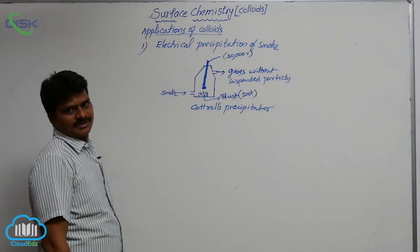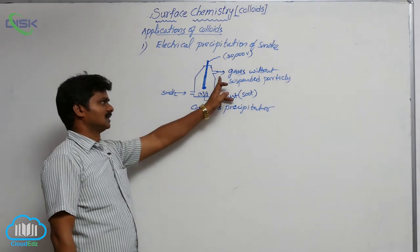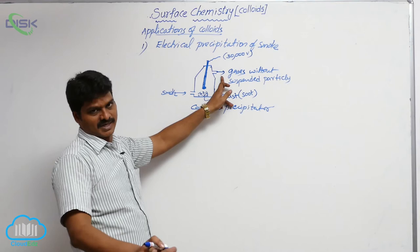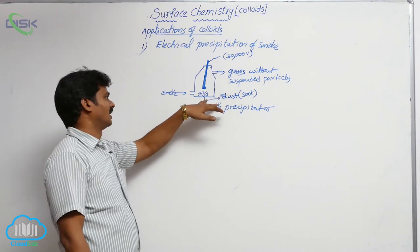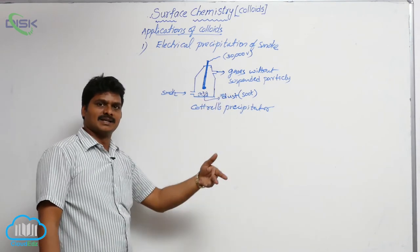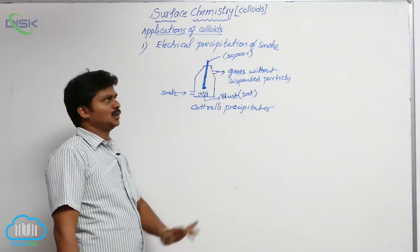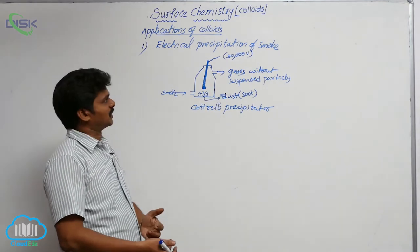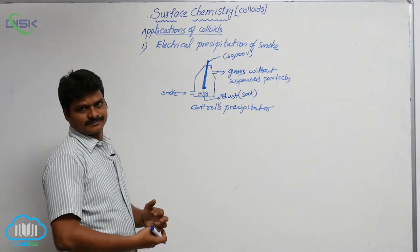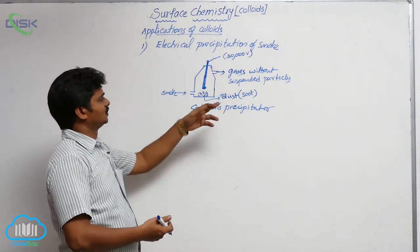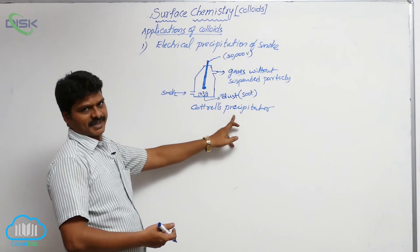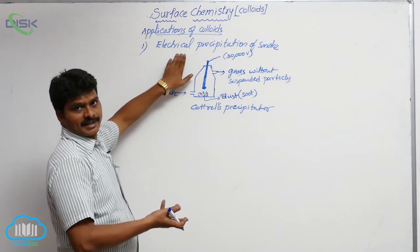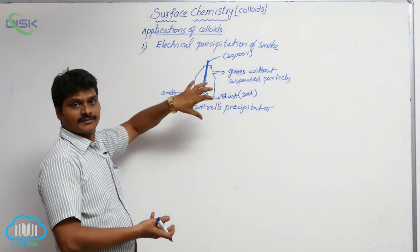The gases that exit no longer contain any suspended particles. In that way, using the Cottrell's precipitator, we can coagulate and remove the dust from smoke released from an industry, preventing air pollution.